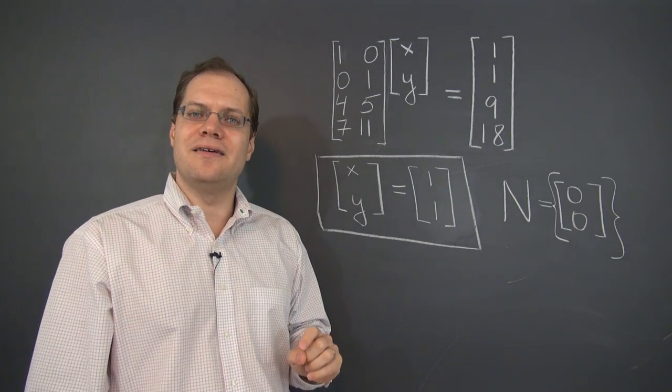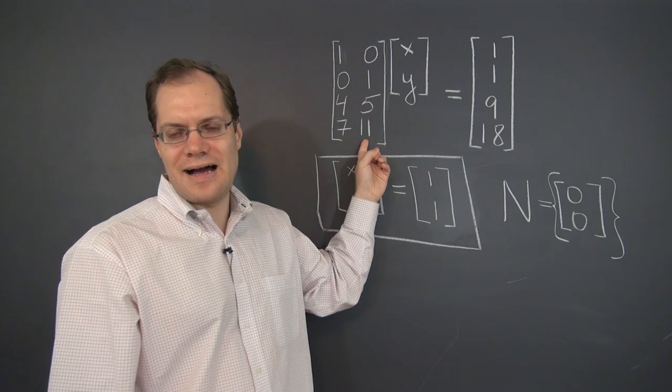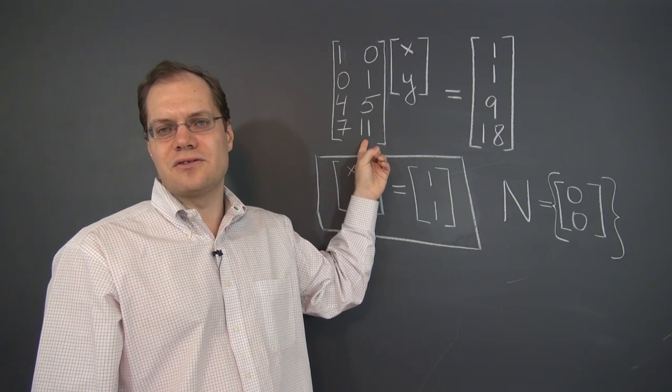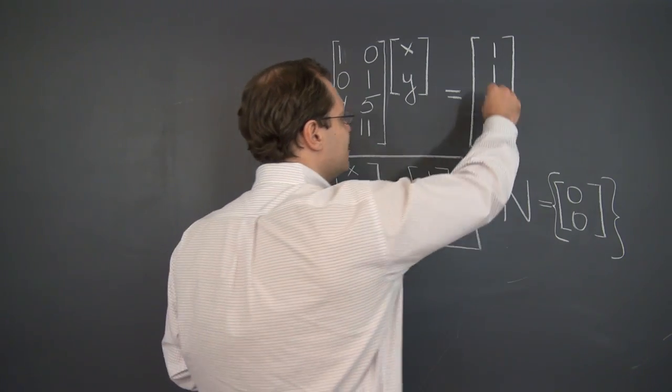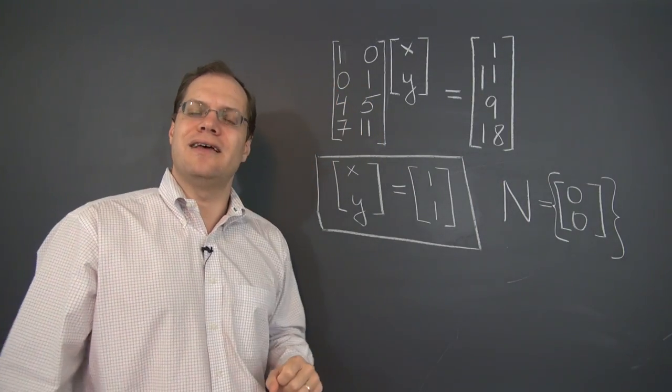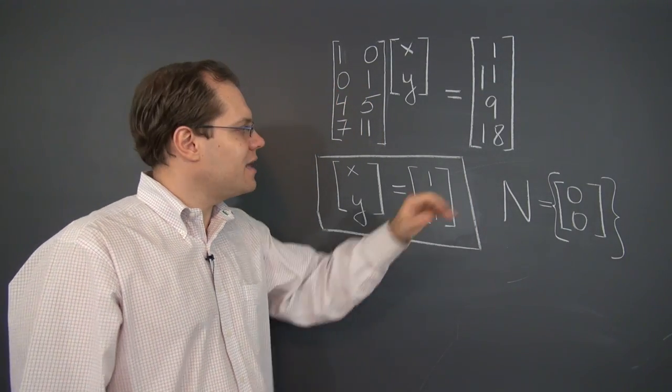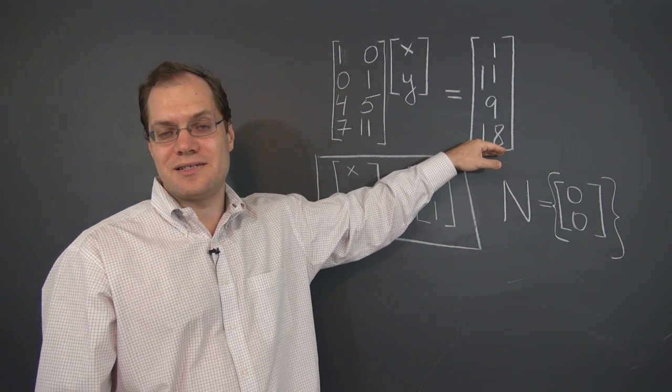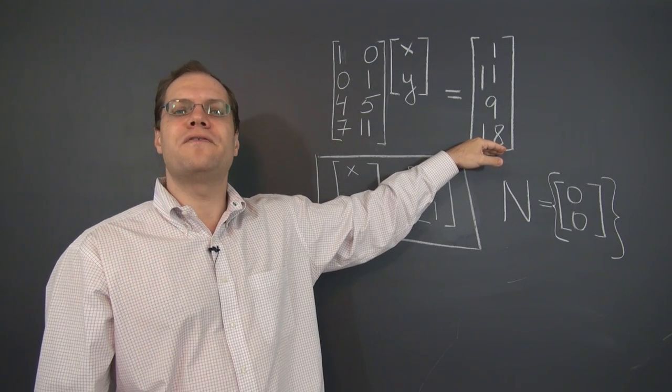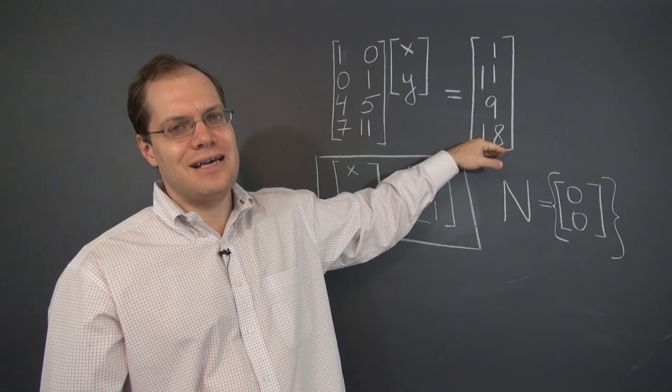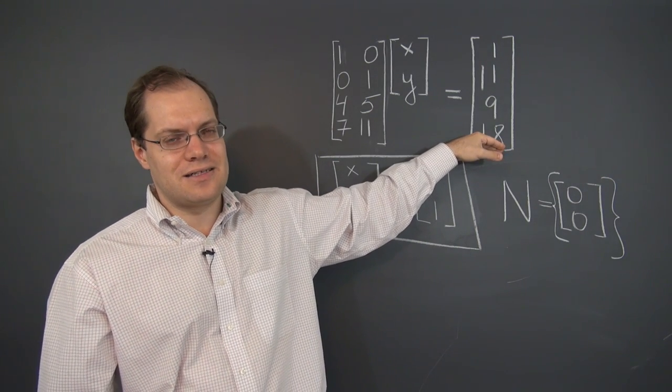So the interesting question now then is, did we get lucky? Did we get lucky that the right-hand side was actually in the column space of these two vectors? What if I changed it slightly and arbitrarily by making this an 11? So we'll actually answer the question of whether or not this system has a solution, but first let's talk about whether it's likely to have a solution.